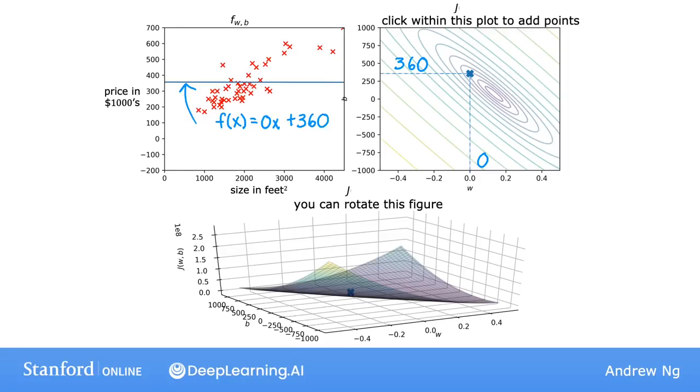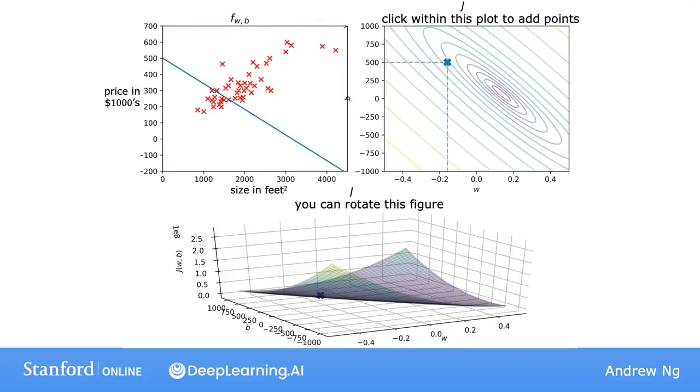Let's look at yet another example. Here's one more choice for w and b, and with these values, you end up with this line, f of x. Again, not a great fit to the data. It is actually further away from the minimum compared to the previous example. And remember that the minimum is at the center of that smallest ellipse.